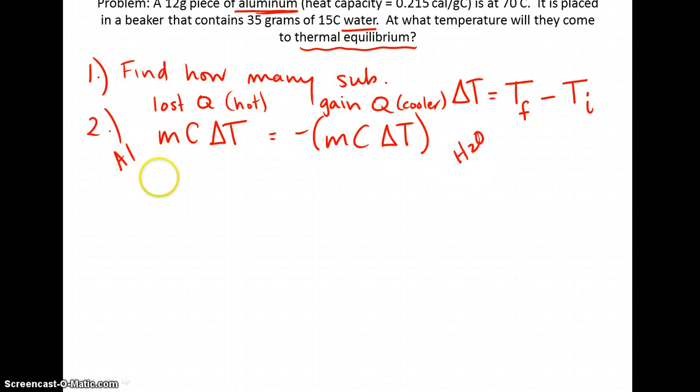I have 12 grams of aluminum, and it has a heat capacity of 0.215 cal per gram. Now I need to get that delta T. In this case, it looks like it's at 70 degrees, and we want to know what its final temperature is. We don't know its final temperature yet because it hasn't reached equilibrium. So I have Tf being my final temperature minus what initial temperature was, was 70 degrees Celsius.